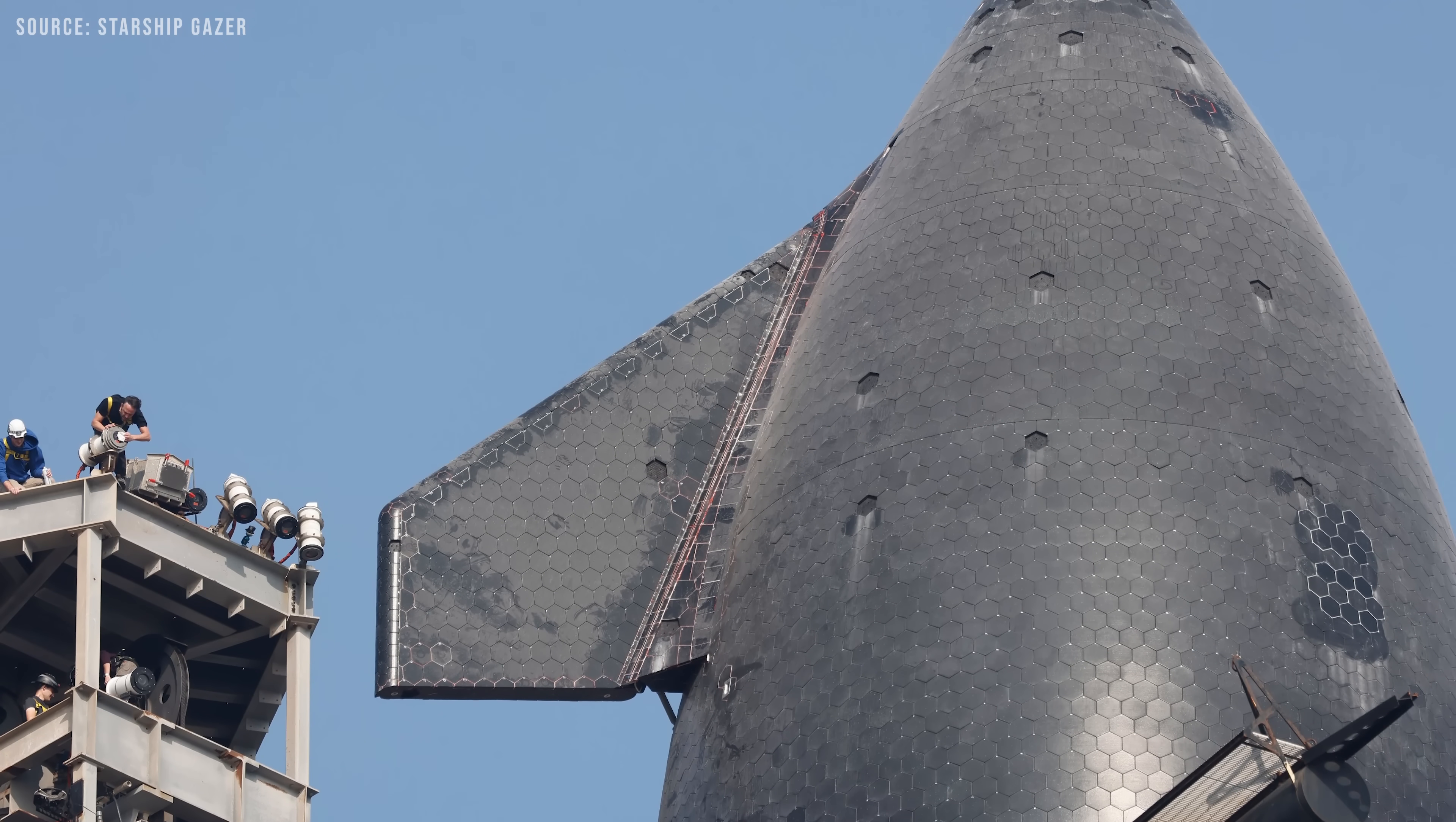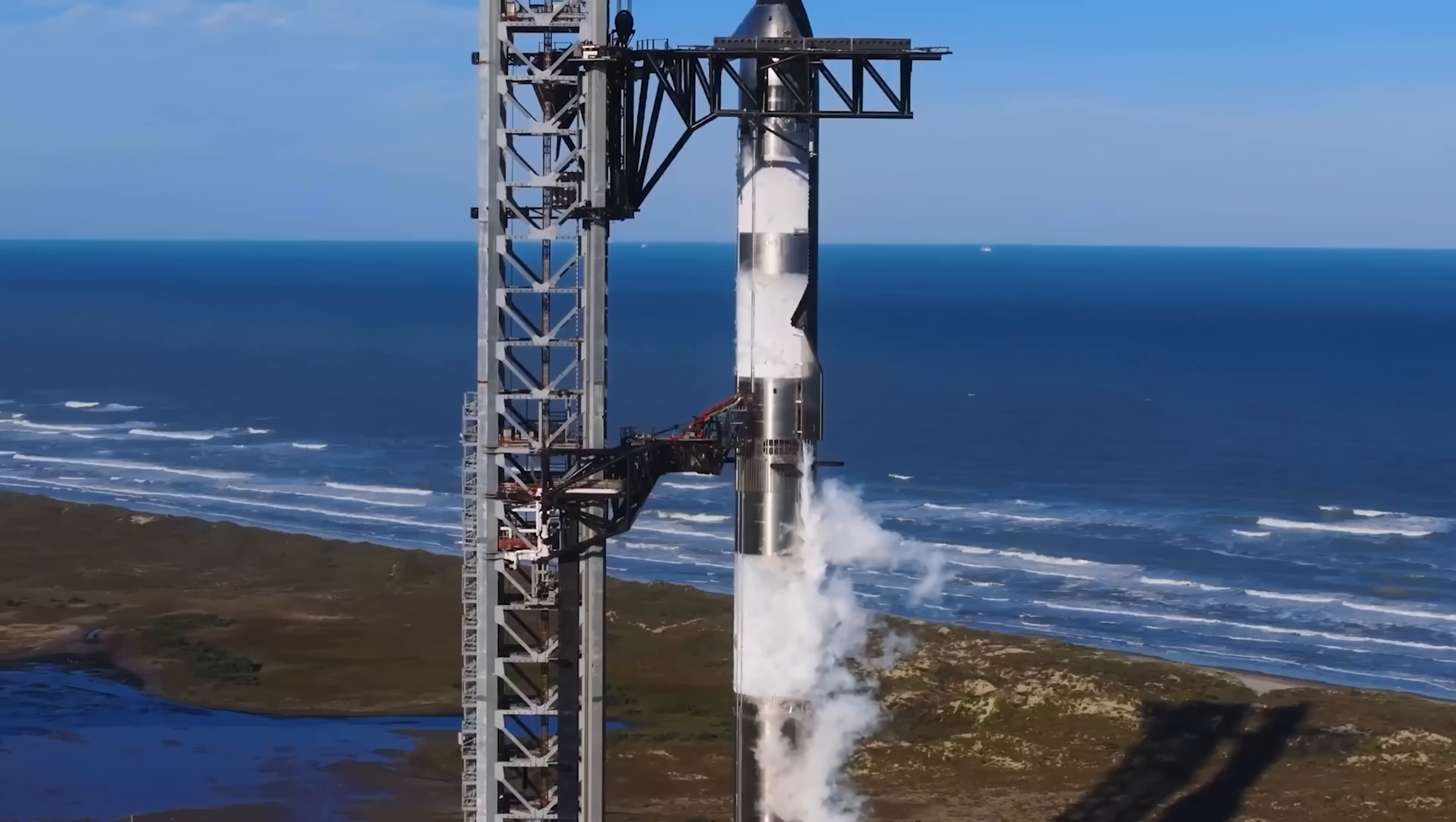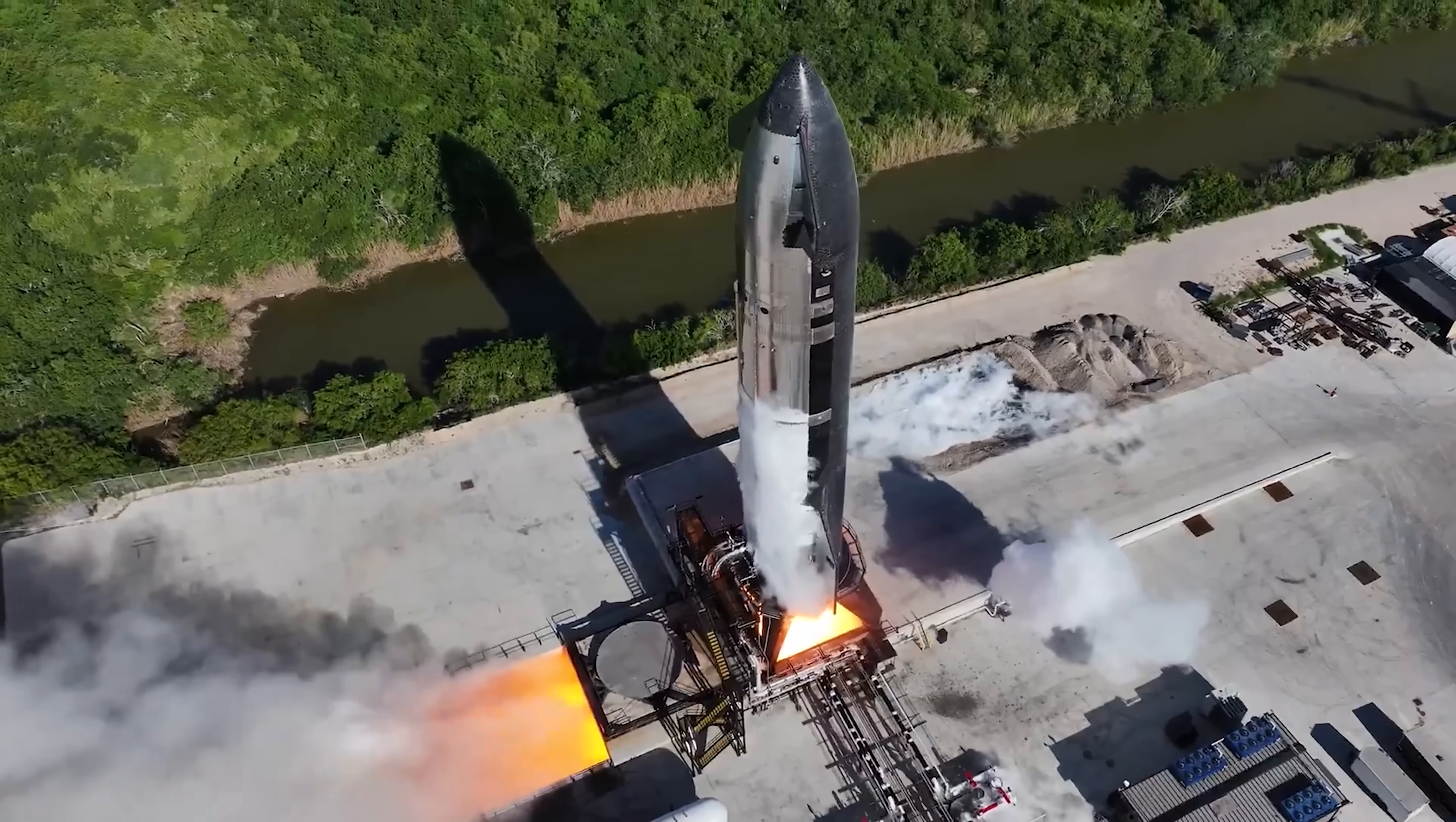Starship's nosecone is one of the most visually striking parts of the spacecraft, especially when compared to a traditional rocket. Simply put, the nosecone is the pointy section at the top. For a spacecraft as massive as Starship, it has to handle enormous stress. Not only does it need to cut through the atmosphere during launch with as little drag as possible, but it also has to survive the extreme heat and pressure of re-entry. So it's definitely one of the toughest parts of the spacecraft.